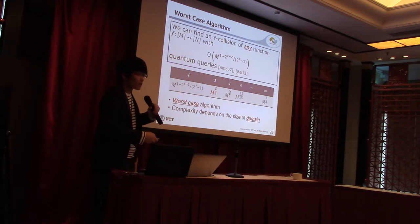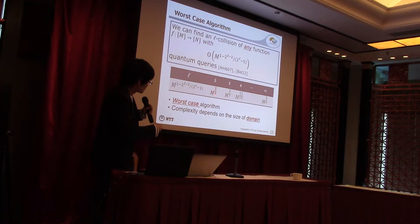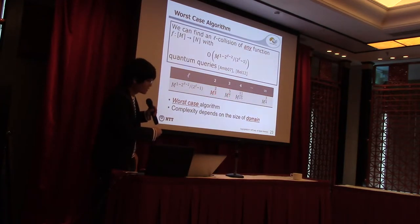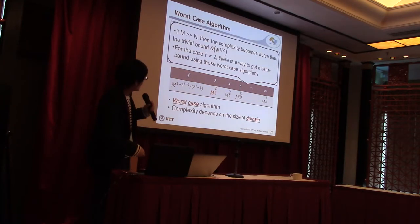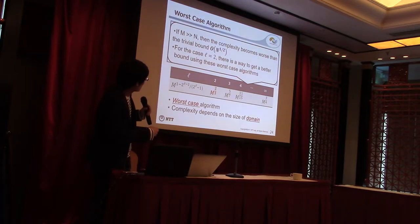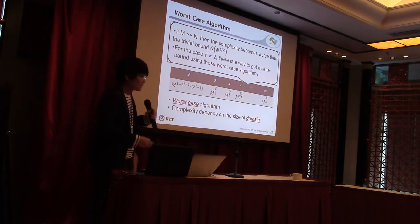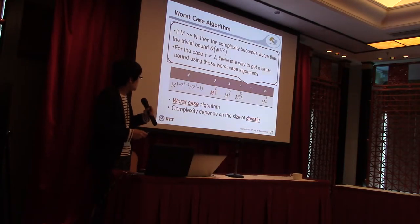For example, if L is 2, then the bound becomes m to the power 2/3. If L is 3, then the bound becomes m to the power 5/7, and so on. If m is much larger than n, the complexity becomes worse than the trivial bound. However, for the case L=2, there is a way to get a better bound using these worst-case algorithms.